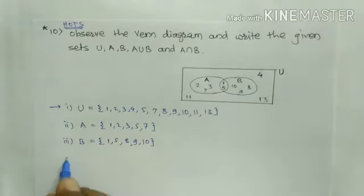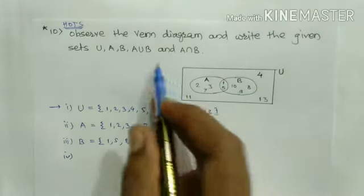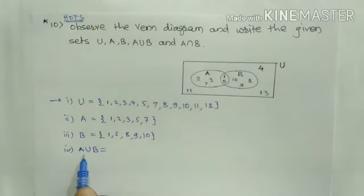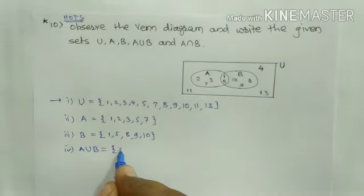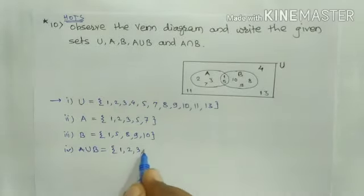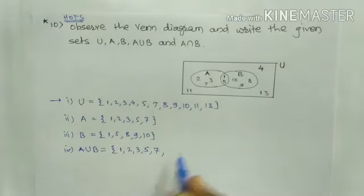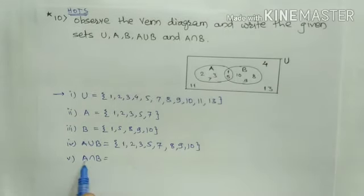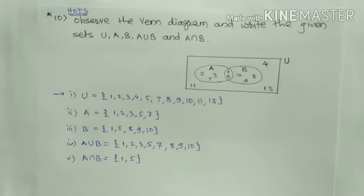Then we have to write A union B. A union B is the set of all elements in A and B — the elements which are in A or B are included in A union B. So A union B equals {1, 2, 3, 5, 7, 8, 9, 10}. Then A intersection B is the set of common elements in the two sets, that is 1 and 5.